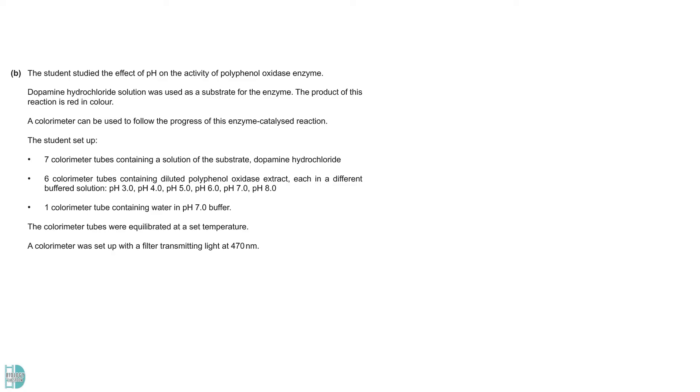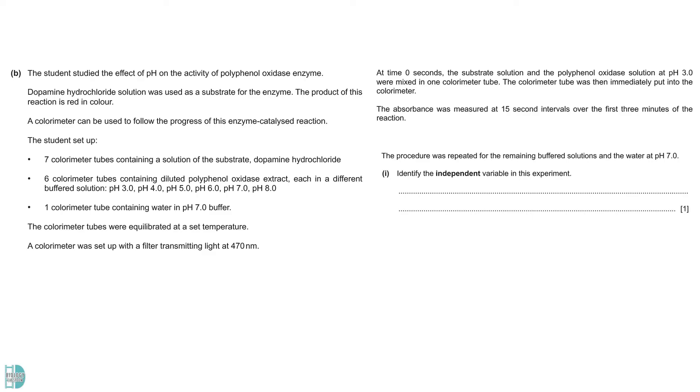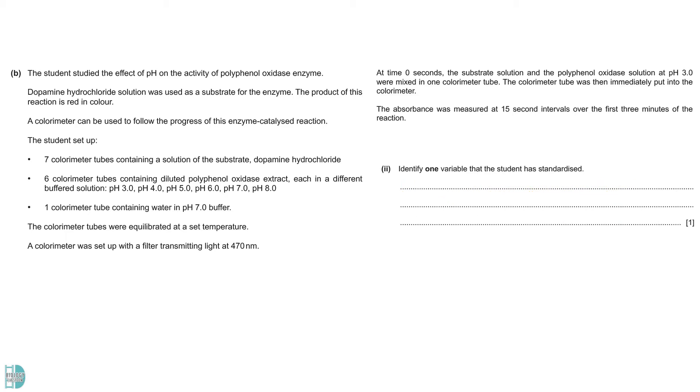In B, we have some information about an investigation of the effect of pH on enzyme activity. The substrate and enzyme were mixed in a calorimeter tube at different pH. The absorbance was measured at 15 seconds intervals for 3 minutes. The independent variable is the pH as this is what the student changed to see how it affects the enzyme activity. Part 2 asks you to identify one variable that the student has standardized. This question wants you to state a control variable that was mentioned in the procedure. You are not asked to suggest control variables that should be maintained.